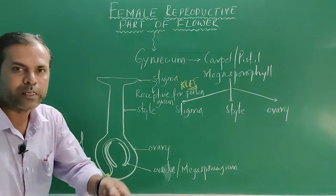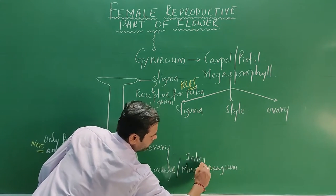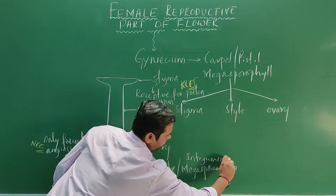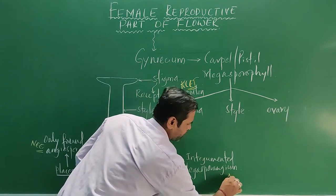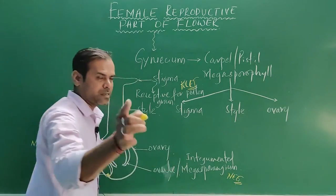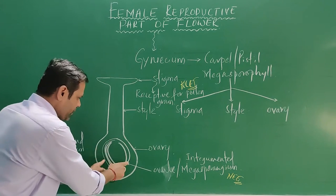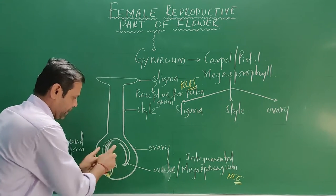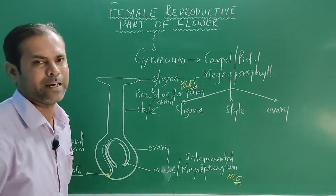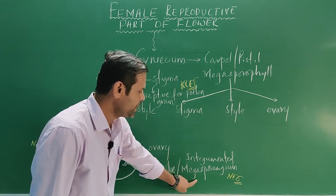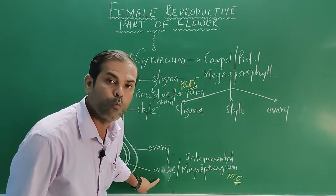This ovule is also known as integumented megasporangium — this is again an asked NEET-level question. The ovule is covered by two coverings which are called integuments. That is why it is called integumented megasporangium or integumented ovule.